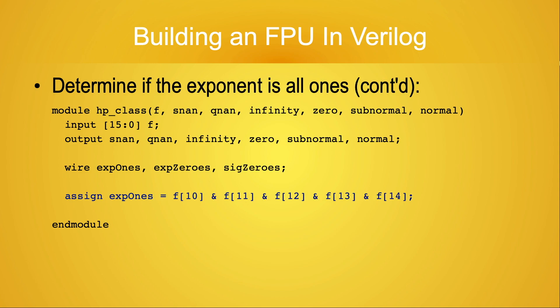Verilog also has a binary AND operator — this statement is equivalent to calling the AND method. However, there is a more elegant way to calculate the same value. The bitwise AND operator can also be used as a unary operator which operates on a bit vector. Using the AND operator as a unary operator looks like this. The expression F[14:10] extracts the exponent field as a bit vector so it can be operated on by the unary AND operator without accessing any of the other bits of F. Verilog calls this form of the AND operator a reduction operator.